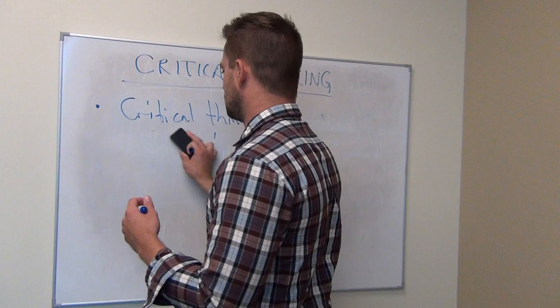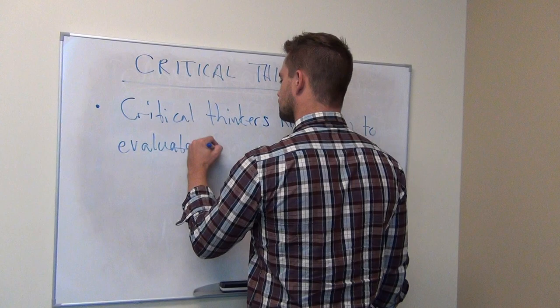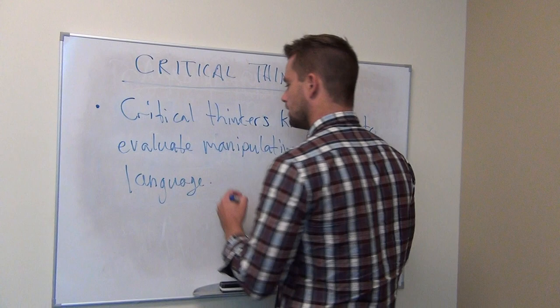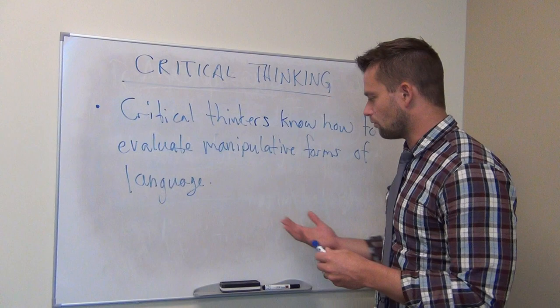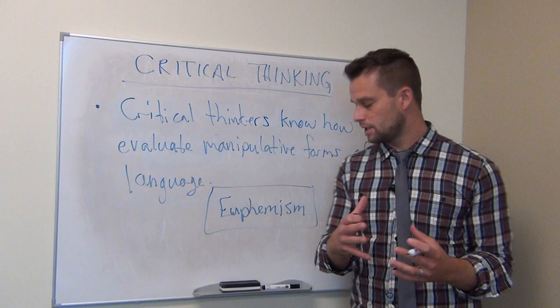Critical thinkers know how to evaluate different types of language — specifically, manipulative forms of rhetoric. There are different ways that people can manipulate language. A euphemism is a word that has a positive or neutral connotation but is used to express something negative.